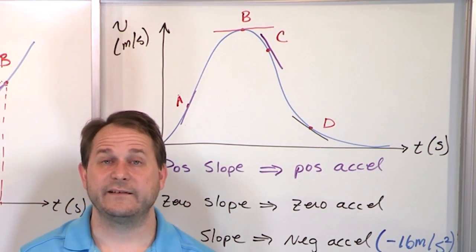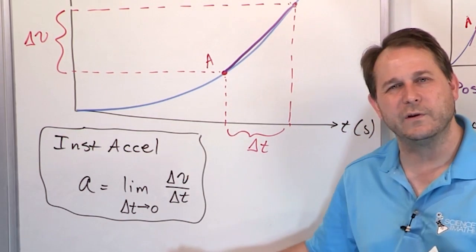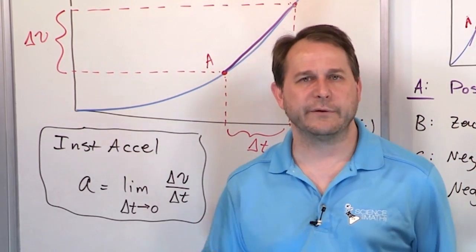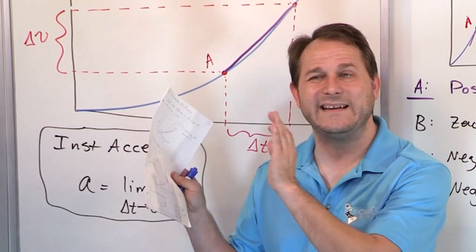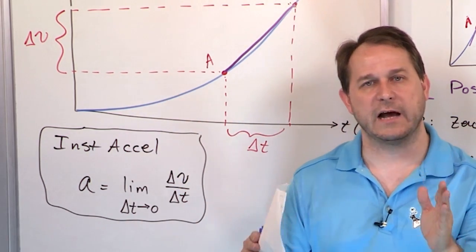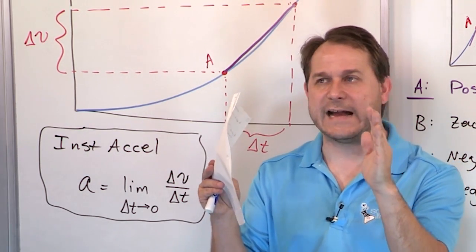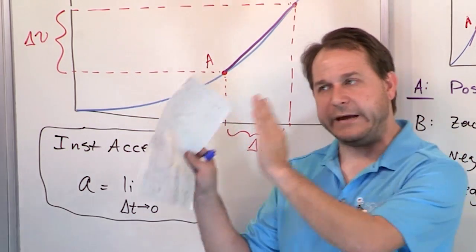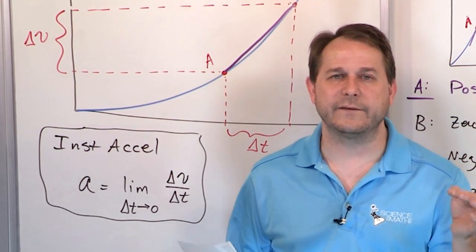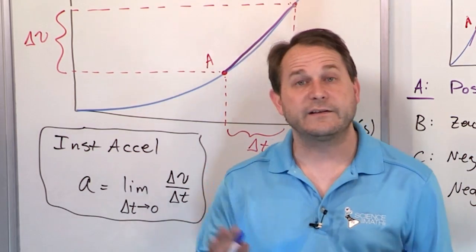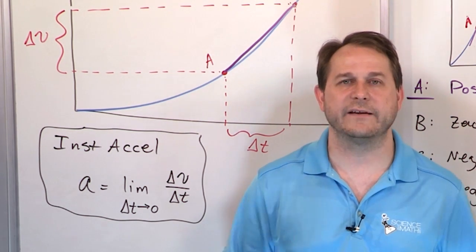That is the concept of instantaneous acceleration. The main takeaway isn't even really the formula — the formula is a good theoretical thing, but the most important thing to remember is: the slope of the line tangent to a displacement curve is what we call velocity; the slope of the line tangent to a velocity curve at any point is what we call acceleration. Meters, meters per second, meters per second squared. That's the physics — the intuitive thing to keep in mind as we go and solve problems with equations of motion.